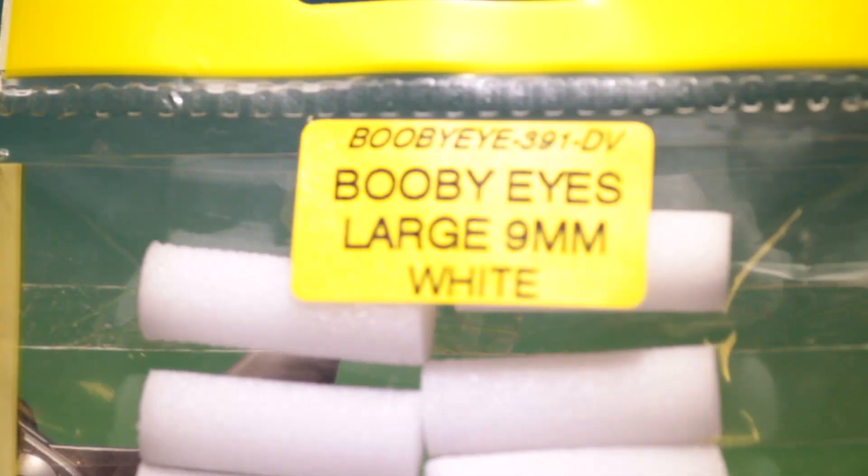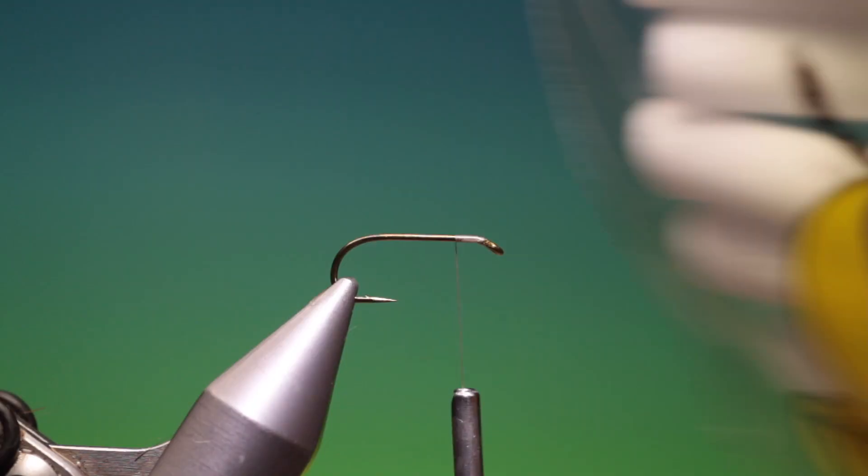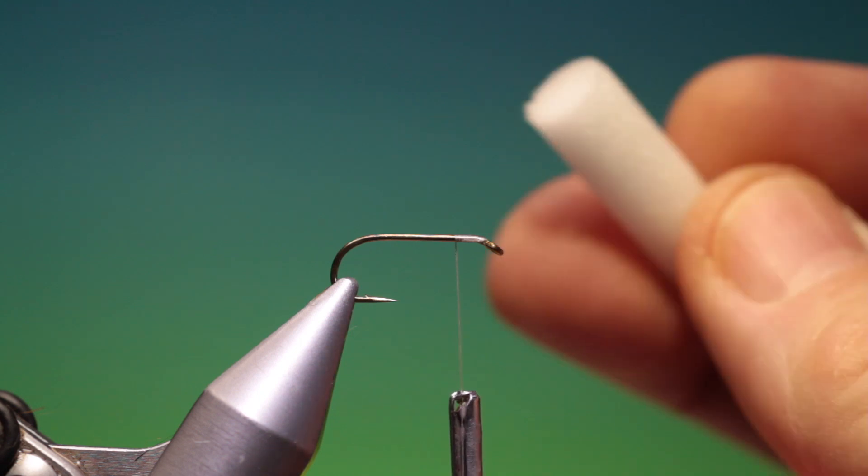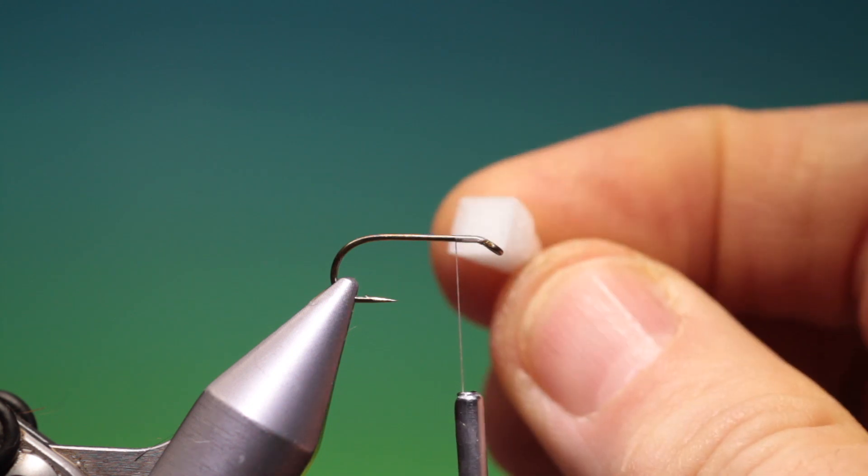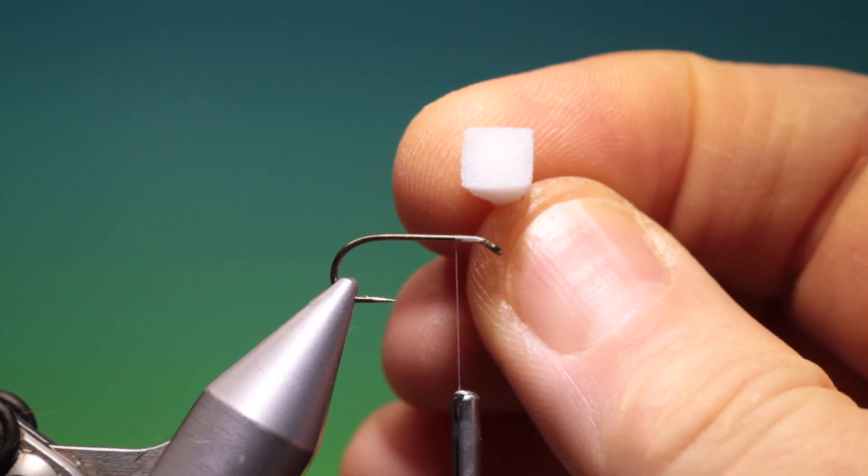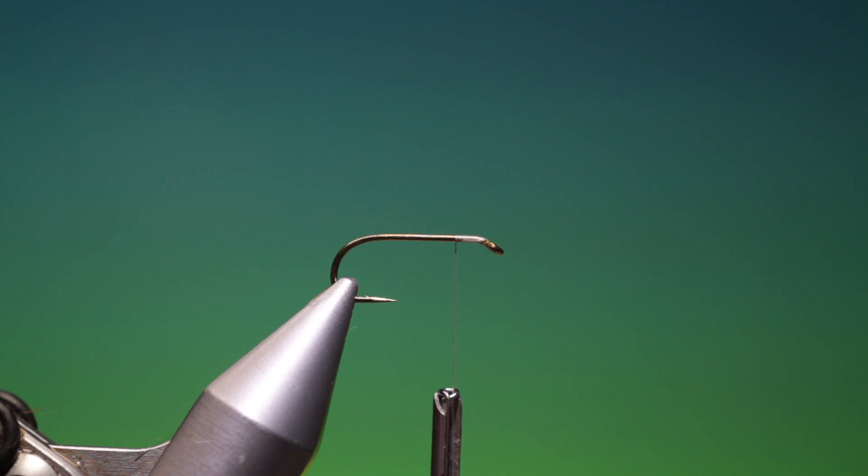Then what we need is some, these are Veniard booby eyes, large white, and then what you have to do is cut this in half and cut the end so it looks like a sugar cube of course.